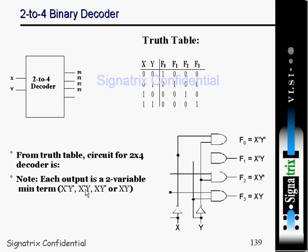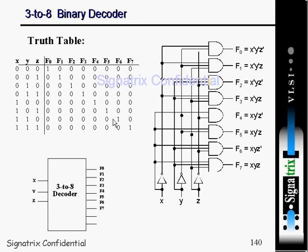From the truth table circuit for the 2-to-4 decoder, you can see each output is a two-variable minterm: x-bar y-bar, x-bar y, x y-bar, and x y. These are the 2-variable minterms. Now coming to the 3-to-8 binary decoder: it has 3 inputs x, y, and z, and 8 binary outputs f0, f1, f2, f3, f4, f5, f6, and f7. Only one bit is high at a time.